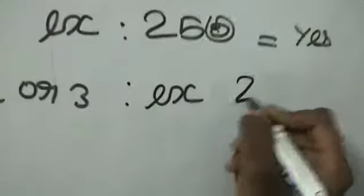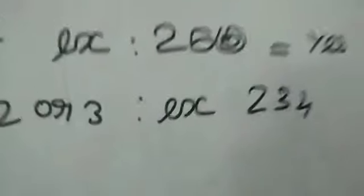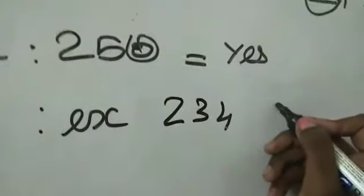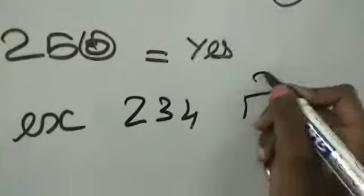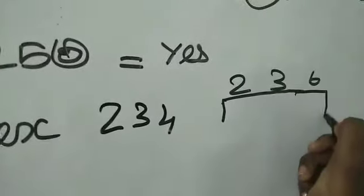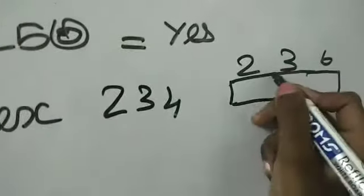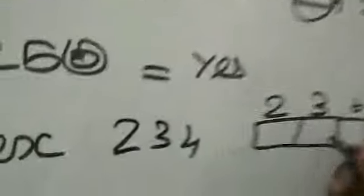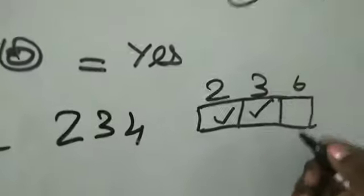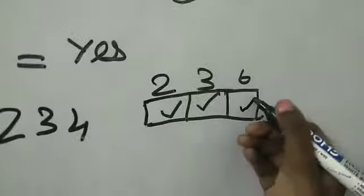266 is divisible by 2, and 2 plus 6 plus 6 equals 14. Yes, it is coming in 3 table, so it is coming in 6 table.